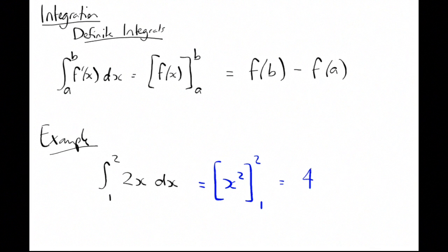So we get 2² = 4, take away sub in the 1: 1² = 1. So 4 - 1 = 3. So the integral between 1 and 2 of 2x dx is 3. A few more examples...